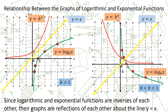Let us look at the relationship between the graphs of logarithmic and exponential functions. Since logarithmic and exponential functions are inverses of each other, their graphs are reflections of each other about the line y = x — both when b > 1 and when 0 < b < 1.